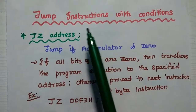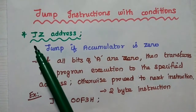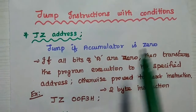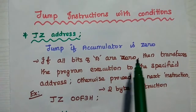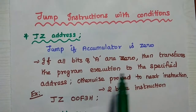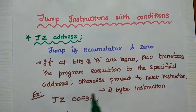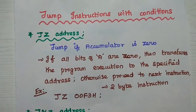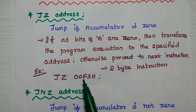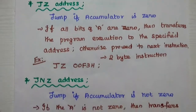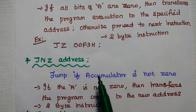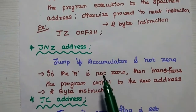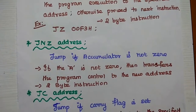Next are jump instructions with conditions. JZ address means jump if the accumulator content is equal to 0. If all bits of the accumulator are 0, transfer program control to the specified address; otherwise, proceed to the next instruction. This is a 2-byte instruction. JNZ address means jump if the accumulator content is not 0, then jump to the given address. It is also a 2-byte instruction.